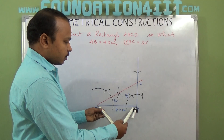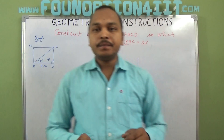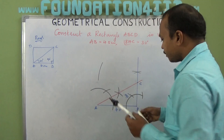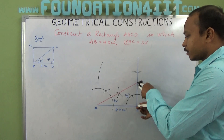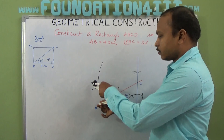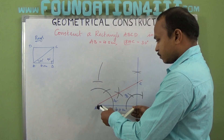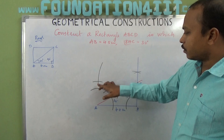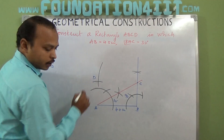Measure A to B — it is 4.5 cm. From C, draw an arc of 4.5 cm to locate D. Again, BC is exactly equal to AD. Find out B to C using the compass, keep that measurement, and from A also draw an arc. The intersection gives us the fourth vertex D.